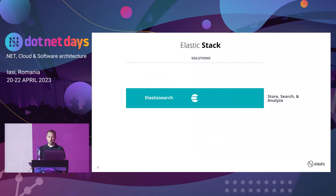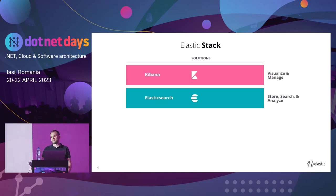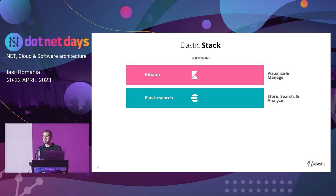Getting into the stack itself: the core is Elasticsearch, where the company began. This is the core product that does the data storage, search, and analytics, and it's fundamentally the heart of any system you build with Elastic technology. To make it easier to work with, we have Kibana — our UI — where you can manage the Elasticsearch servers, configure your environment, work with your data by visualising it, building dashboards, alerting, and doing ad hoc querying.